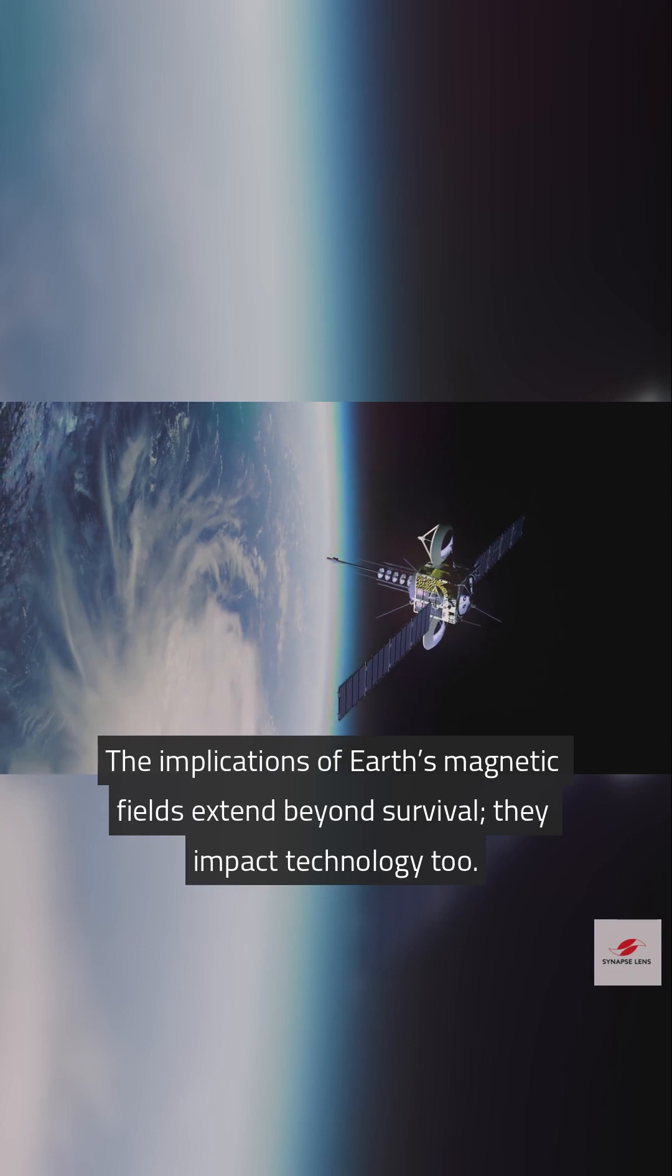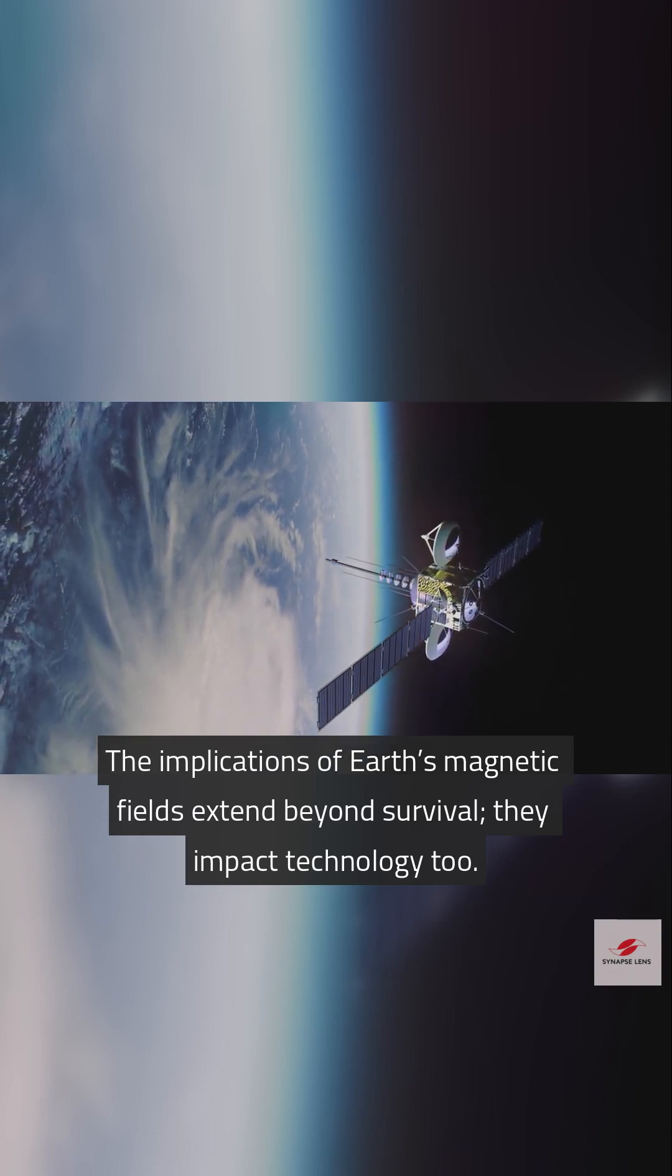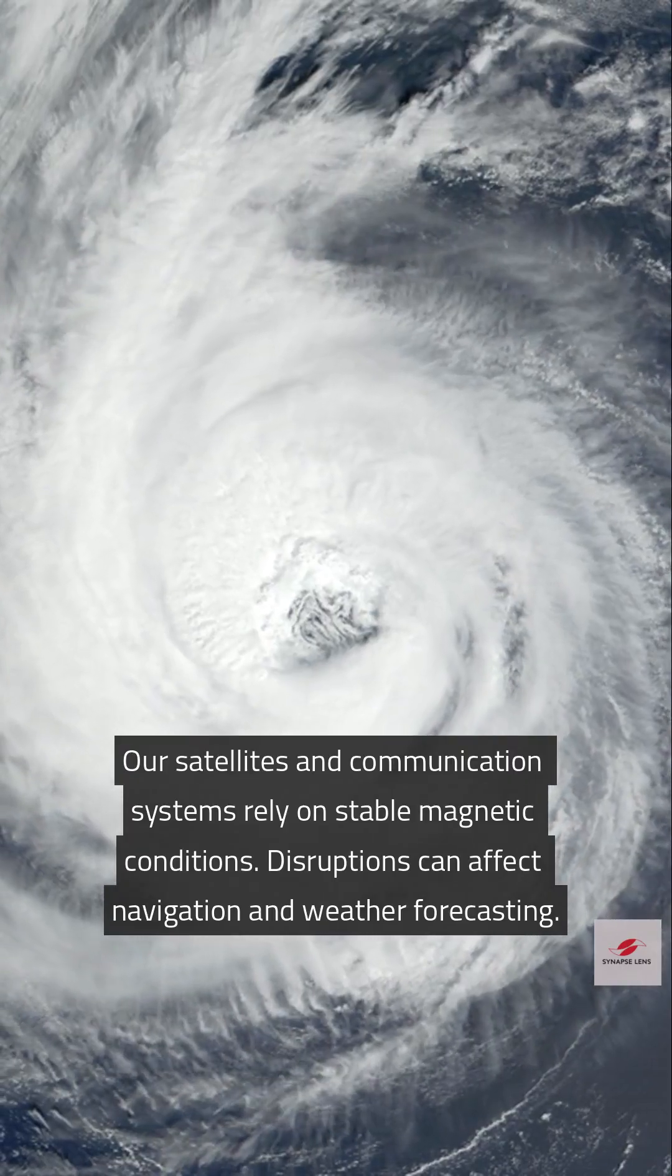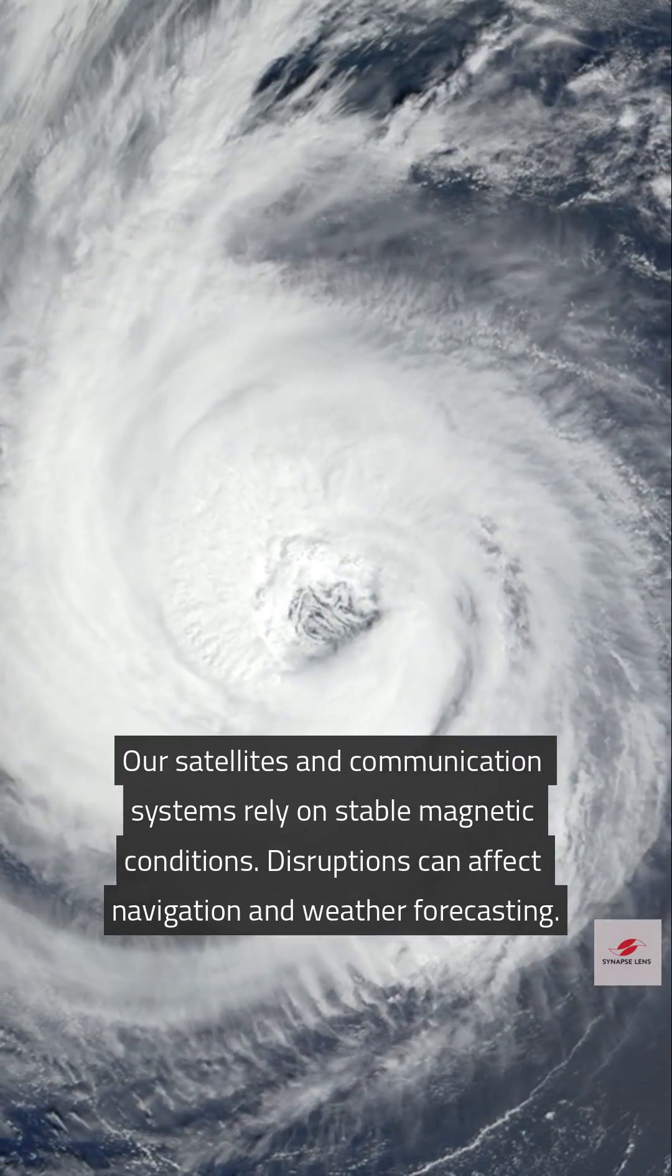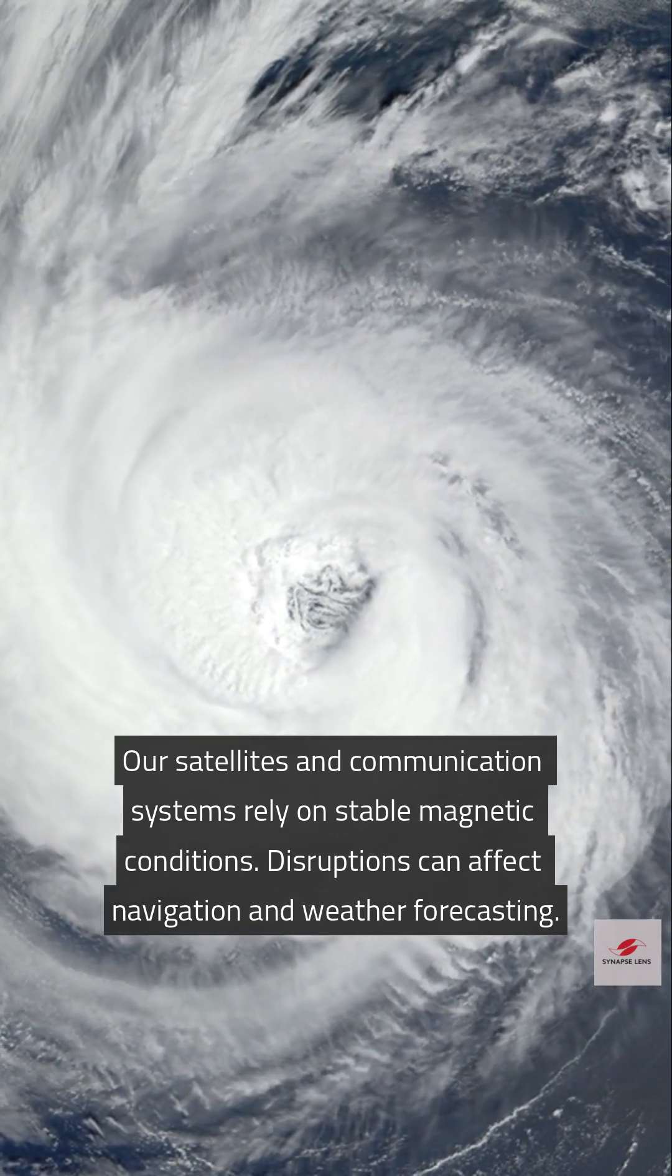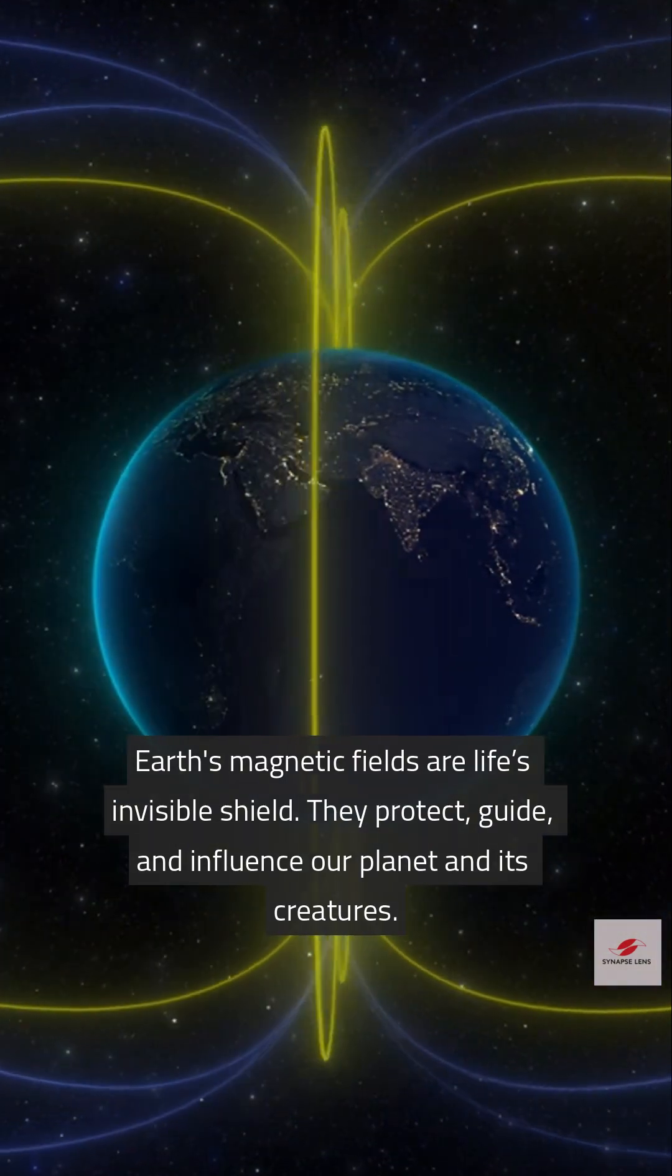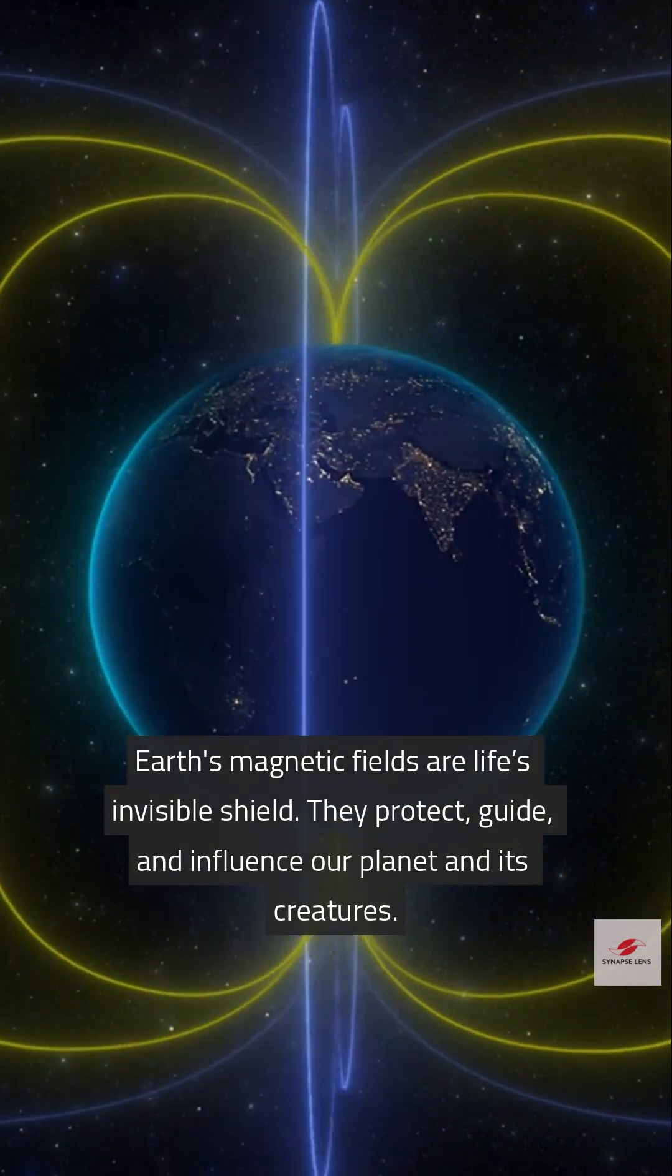The implications of Earth's magnetic fields extend beyond survival. They impact technology too. Our satellites and communication systems rely on stable magnetic conditions. Disruptions can affect navigation and weather forecasting. Earth's magnetic fields are life's invisible shield. They protect, guide, and influence our planet and its creatures.